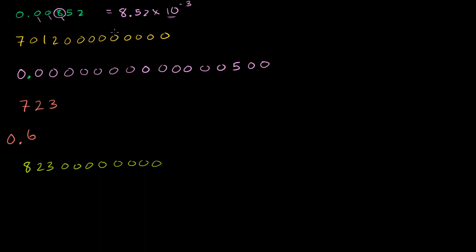For the large number 7,012 followed by zeros, let's count the zeros: 3, 6, 9, 12. What we want to do again is start with our largest non-zero term, which is the term all the way to the left — that's our 7. So it's going to be 7.012 times 10 to the what?